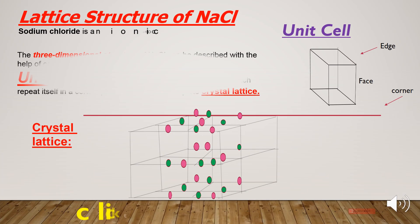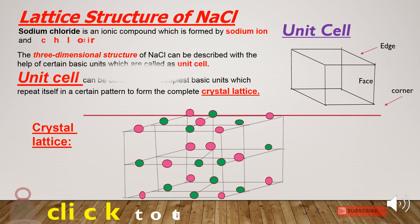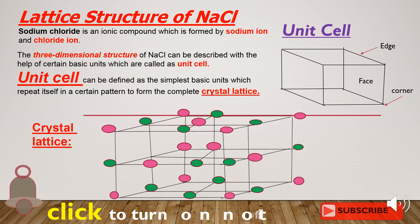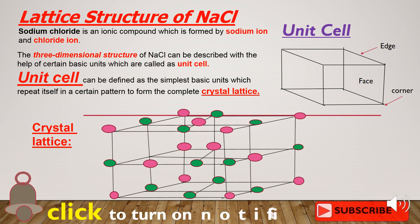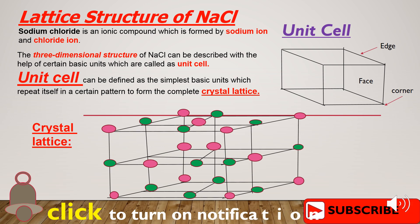Let's discuss the lattice structure of sodium chloride. Sodium chloride is an ionic compound which is formed by the sodium ions and the chloride ions. The three-dimensional structure of sodium chloride can be described with the help of certain basic units which are called unit cells.